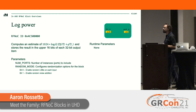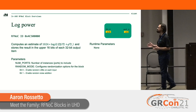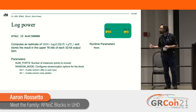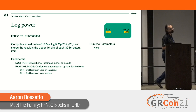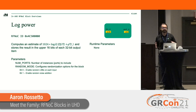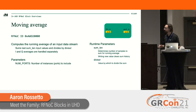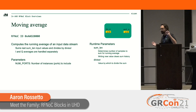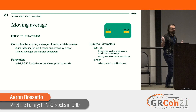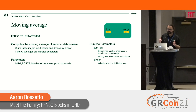The log power block computes an estimate of log base two of the square root of I-squared plus Q-squared, storing the result — a scalar value — in the upper 16 bits of each 32-bit output item, with parameters to add random noise to spread out quantization error. The moving average block takes in a stream of samples, sums the last N samples, divides by a divisor, and outputs that. You can control the length and divisor at runtime.